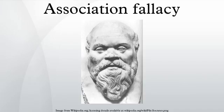Guilt by association — examples. Some syllogistic examples of guilt by association: John is a con artist. John has black hair. Therefore, all people with black hair are con artists. Hitler conspired to murder millions of people. Hitler was a vegetarian and owned a dog, Blondie. Therefore, dog-owning vegetarians will conspire to commit mass murder. Jane is good at mathematics. Jane is dyslexic. Therefore, all dyslexic people are good at mathematics.